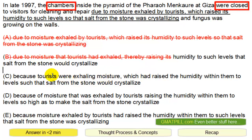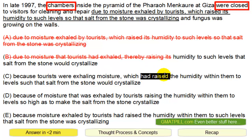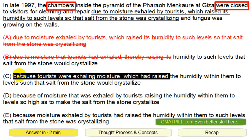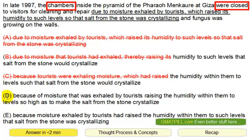Alright, so if you were exhaling moisture — were exhaling — you can't say 'had raised.' So this is inconsistent. That's why C is no good.